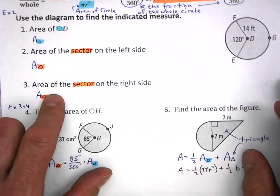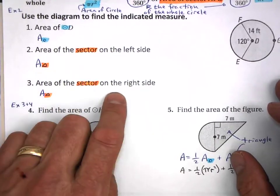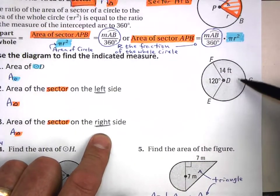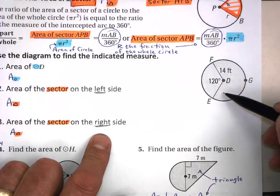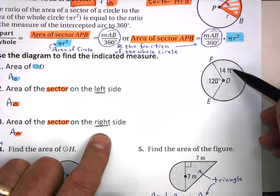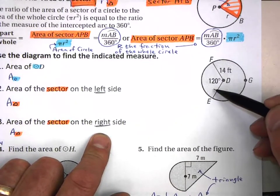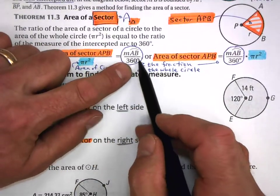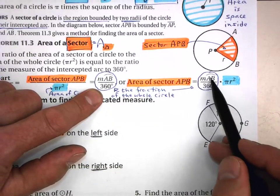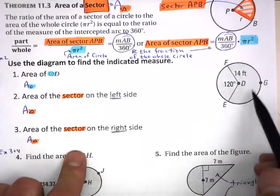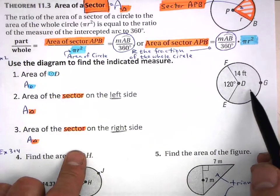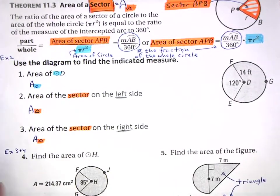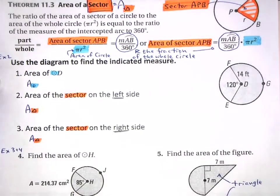For number 3, they're asking for the area of the sector on the right side. The central angle of the right side is 360 minus 120. Whatever that number is, put it over 360 — that's the fraction of the whole — and use the same area of the entire circle to find the area of the right-side sector. Go ahead and pause the video and do those three problems.